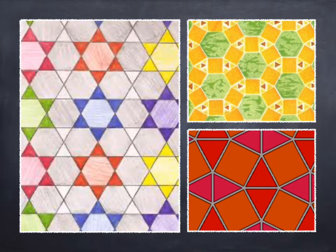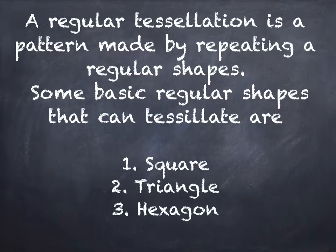Look at these pictures. You can see different designs or patterns of tessellation. A regular tessellation is a pattern made by repeating a regular shape. The basic shapes that can tessellate are square, triangle, and hexagon.